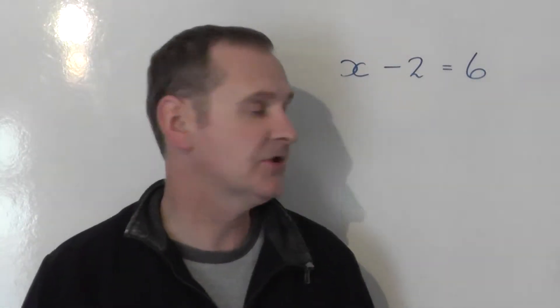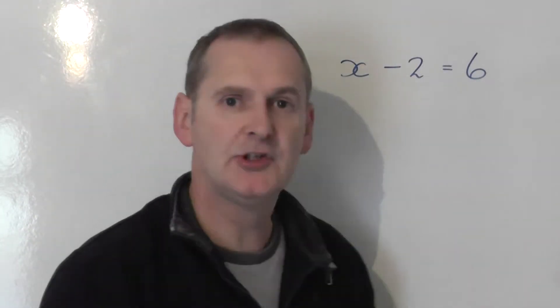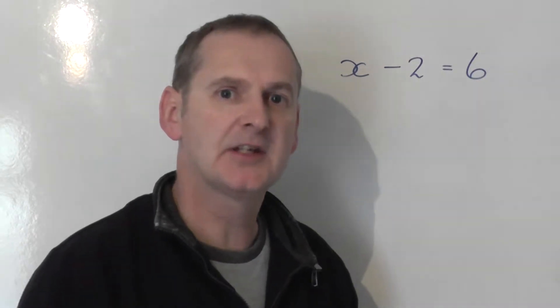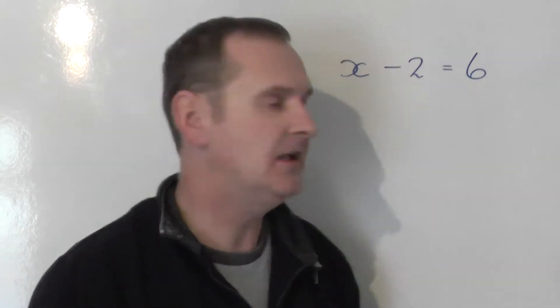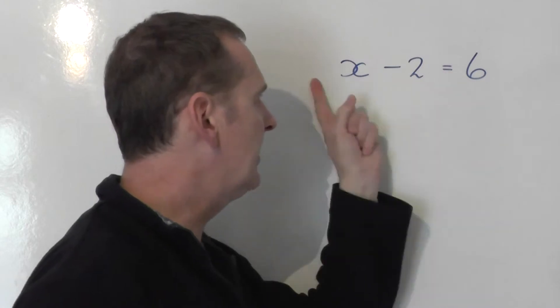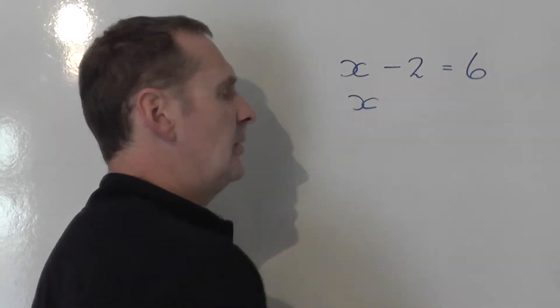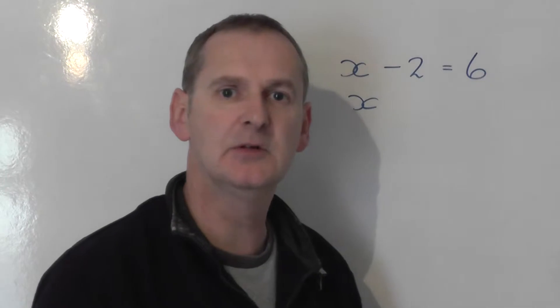Let's solve the equation x minus 2 is equal to 6. As you can quite clearly see, the x is on the left-hand side of the equal sign to begin with. It's on the left-hand side.